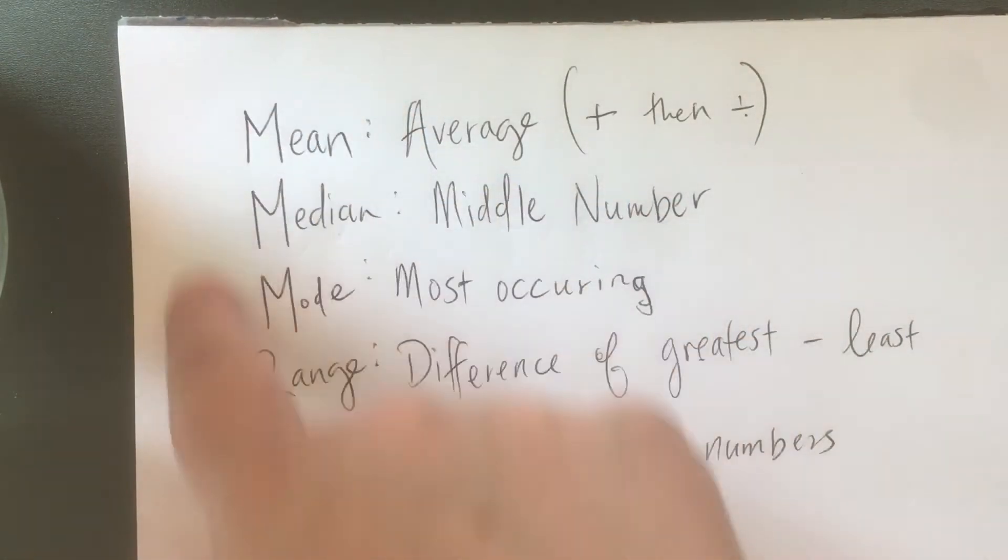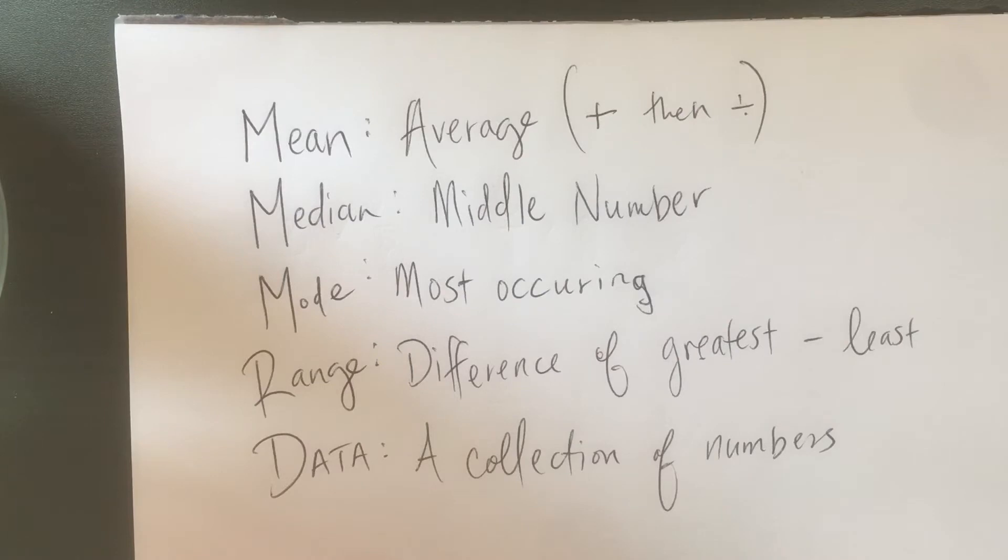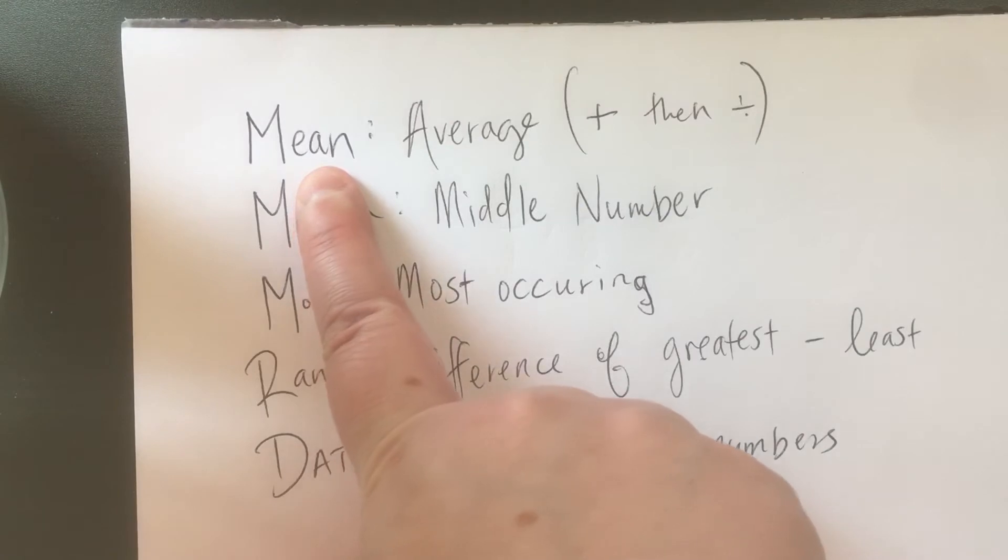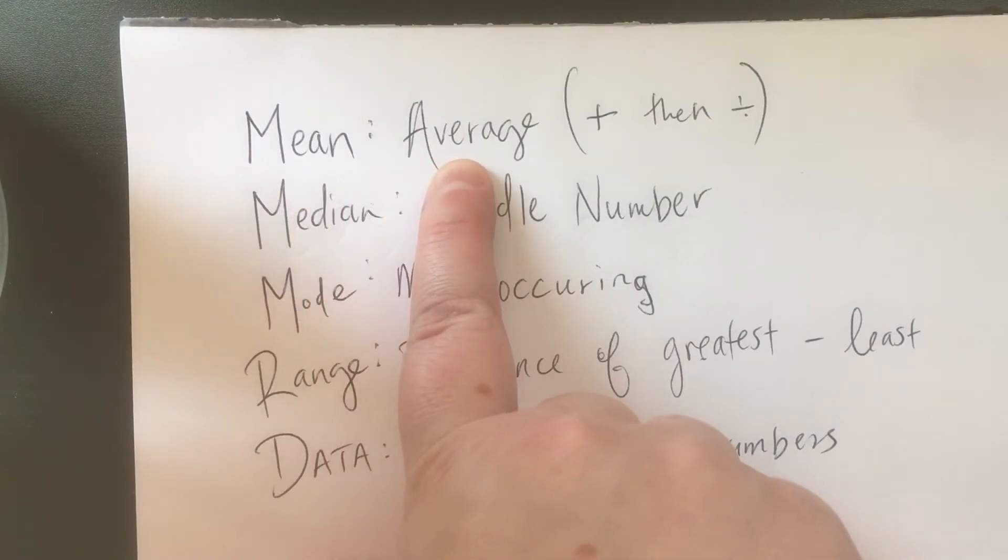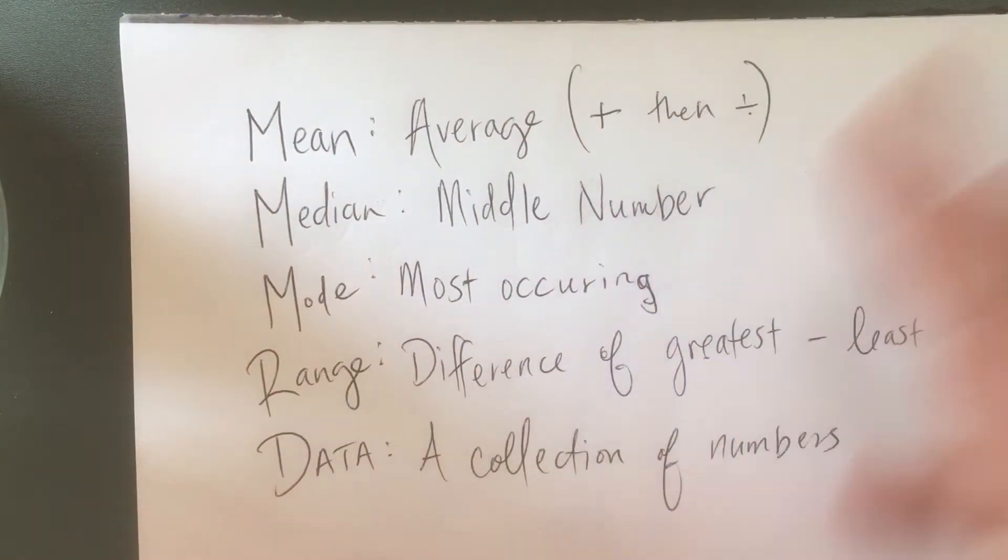Our four big words right here - the four basic pieces of information that we like about our data. The first one being the mean. The mean is the average. Remember, when we find the average, we take the numbers, add them, and then divide by the number of numbers to find that general representation.